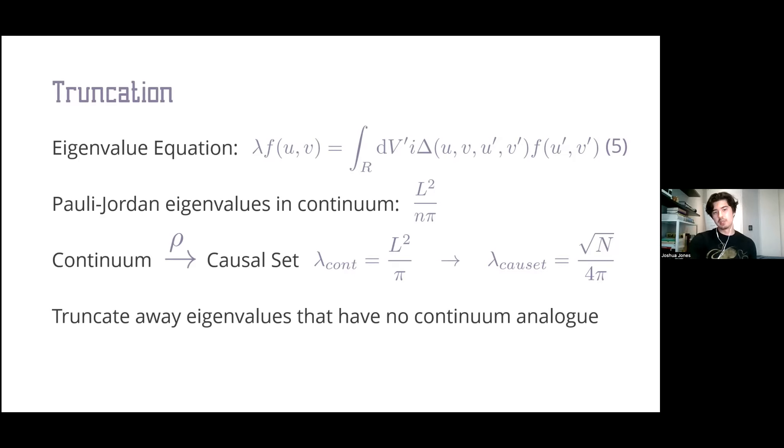Because of this, we can understand the action of the truncation scheme. All we're doing is removing extraneous eigenvalues that have no analogue in the continuum. That is why we need this truncation scheme to retrieve a continuum corresponding area law.